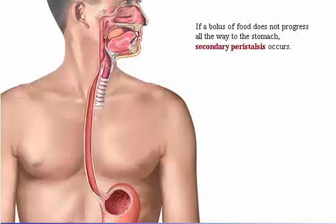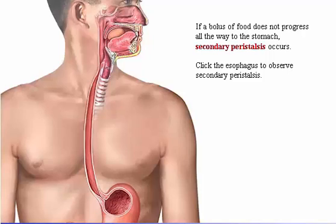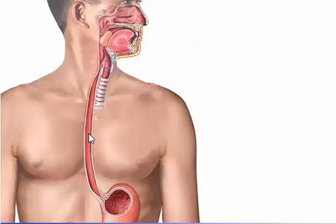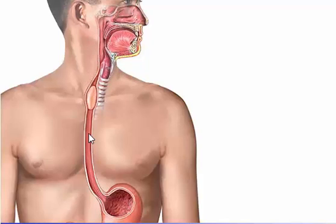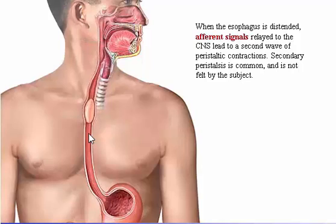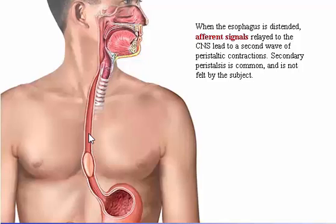If a bolus of food does not progress all the way to the stomach, secondary peristalsis occurs. Click the esophagus to observe secondary peristalsis. When the esophagus is distended, afferent signals relayed to the central nervous system lead to a second wave of peristaltic contractions. Secondary peristalsis is common and is not felt by the subject.